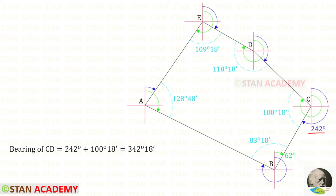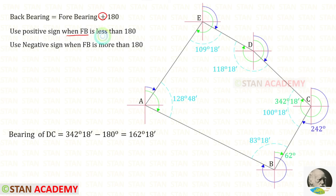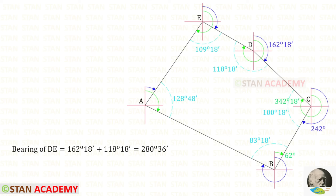Using the corrected interior angle at C (100° 18') and adding it to 242°, we get the fore bearing of CD as 342 degrees 18 minutes. Since this is more than 180 degrees, the back bearing DC = 342° 18' − 180° = 162 degrees 18 minutes.